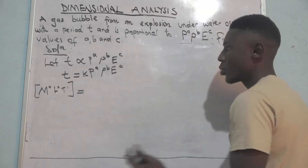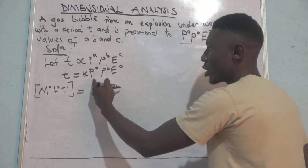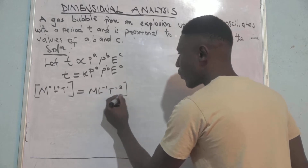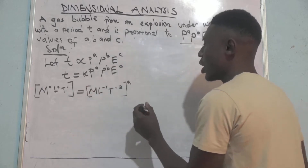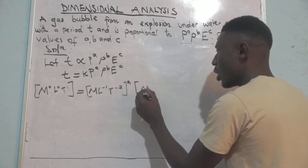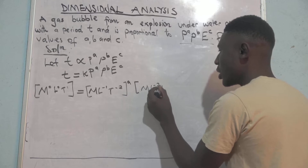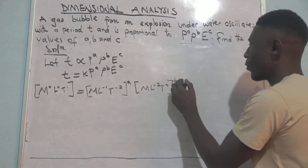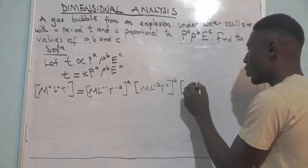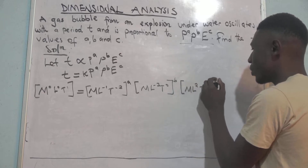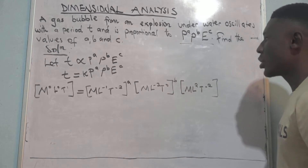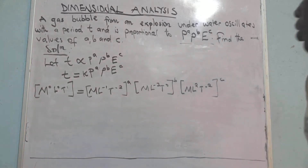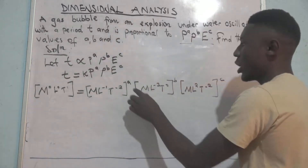The constant K has no dimensions and is not considered. For pressure, we have M L to the power negative 1 T to the power negative 2, and this is raised to the power a. For density, we have M L to the power negative 3, raised to the power B. For energy, we have M L to the power 2 T to the power negative 2, raised to the power C.